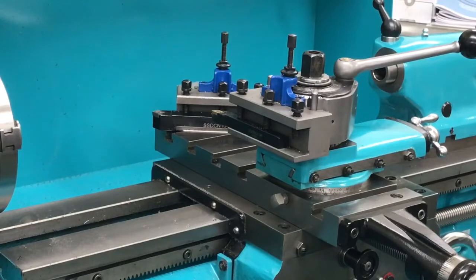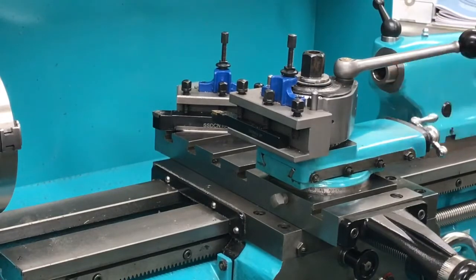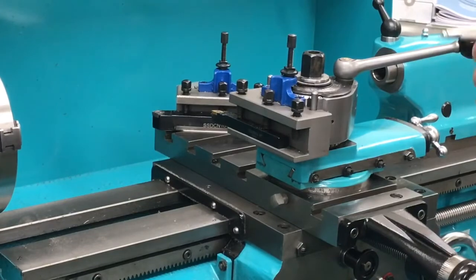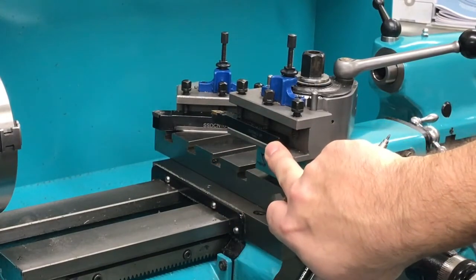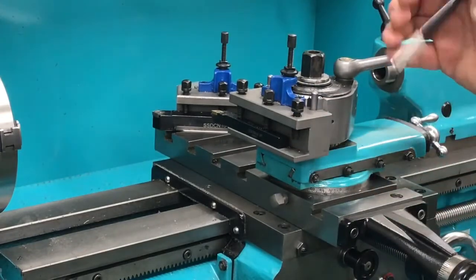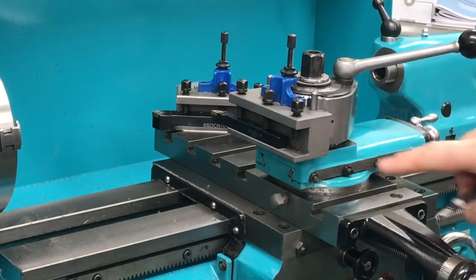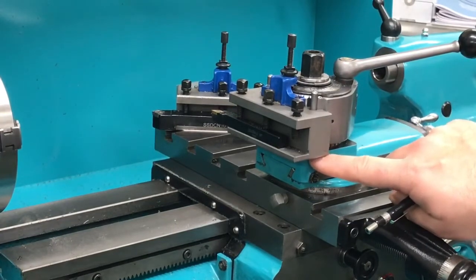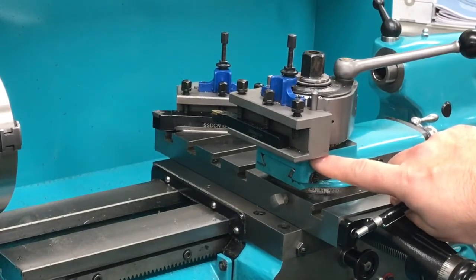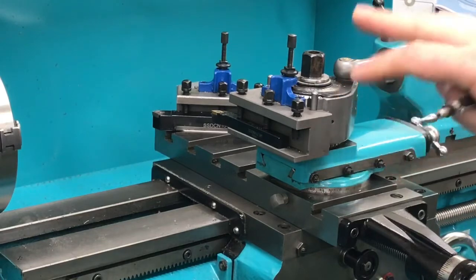First of all, on a previous video, I mentioned that this multifix clone tool post is a size AA. It's not, it's a size A. And it's a little bit big for the Myford. It does fit and it works fine, but just as an observation, this is a 10mm turning tool here, an insert turning tool obviously, and it's mounted in its holder and it's right towards the bottom of the travel of the vertical adjustment on the tool post. That's not a problem.